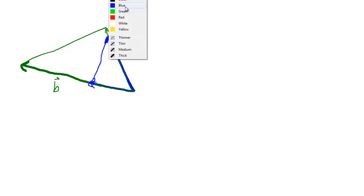then that will give me the magnitude of a, magnitude of b, times the cosine of the angle between them.